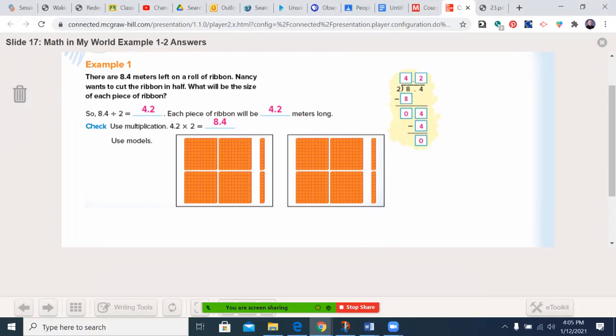If you were so inclined to use models, you could take two groups of 4.2 to get to 8.4. Make sure you're going ahead and written this in.